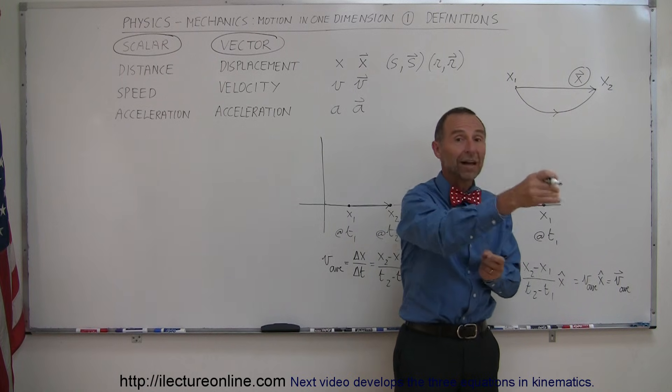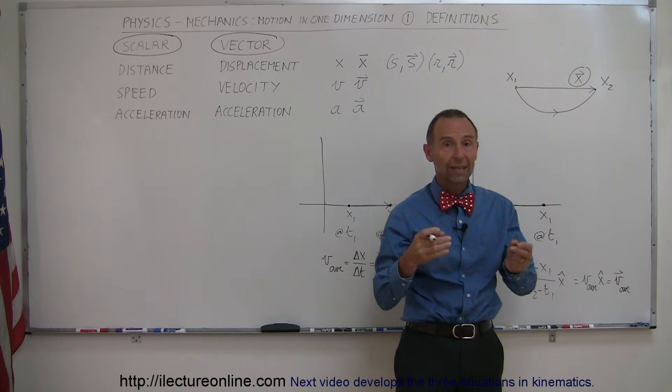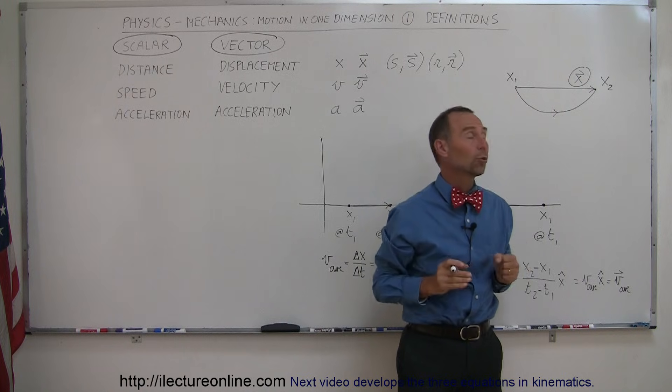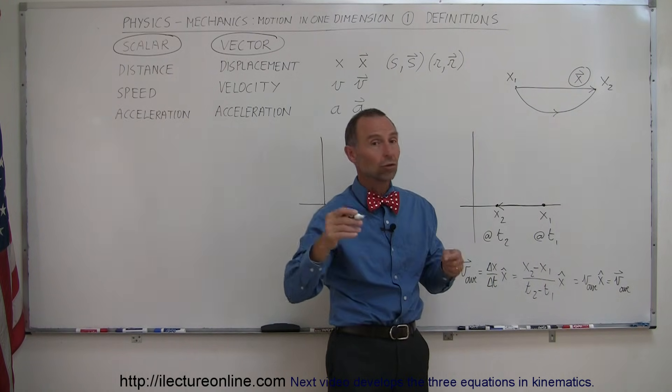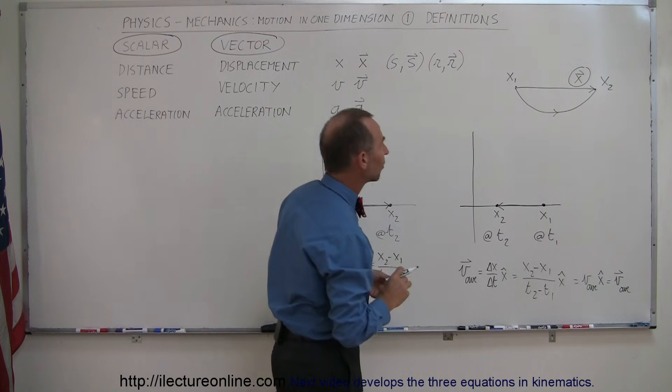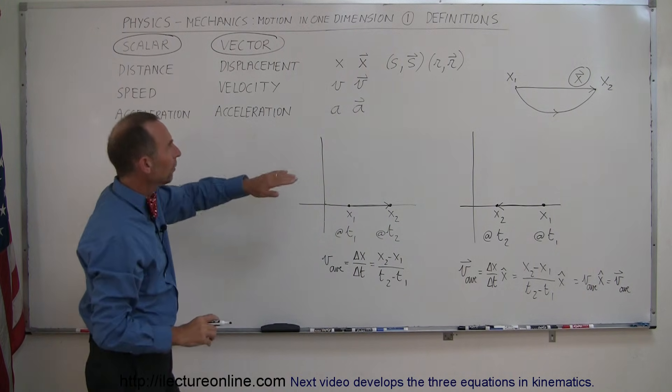So with displacement, we only care about the final position, the initial position, and the straight line distance between them. In the distance traveled, we just simply follow the path that the person took, regardless how crazy the path is. Alright, so here, we have a difference.